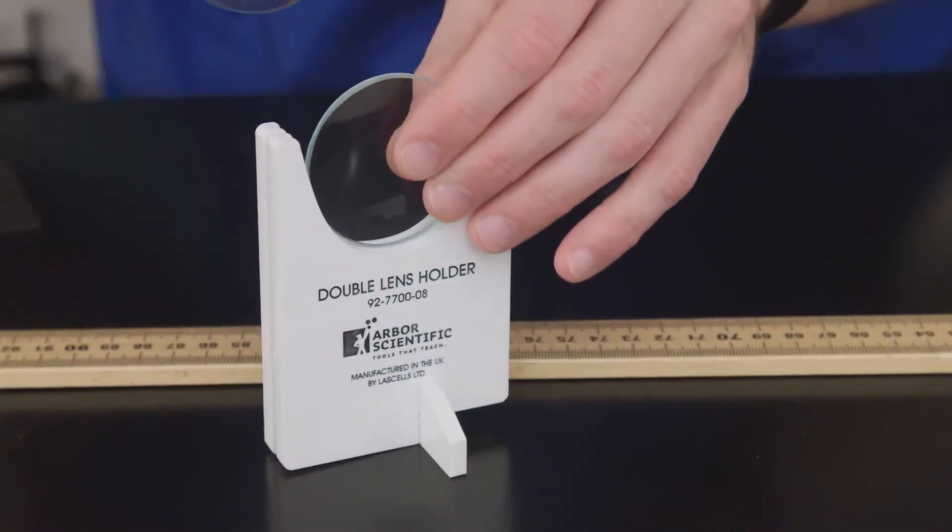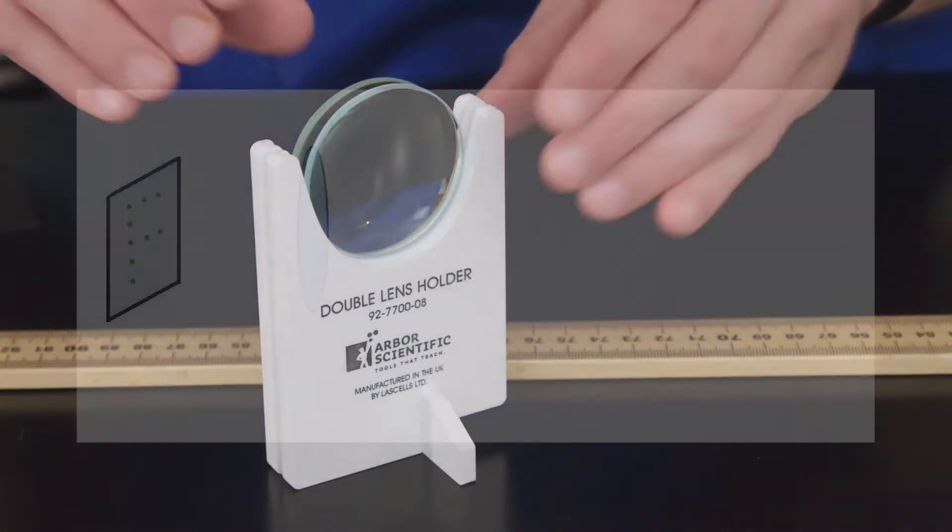So what does happen when you combine two lenses? Well, we can understand this from ray diagrams. The light comes off the object and is focused and projected into the image at the image distance. Then that image is focused and projected again, and this time, for the first time you may have ever seen it, a real image is upright.